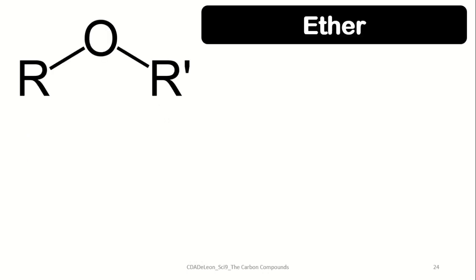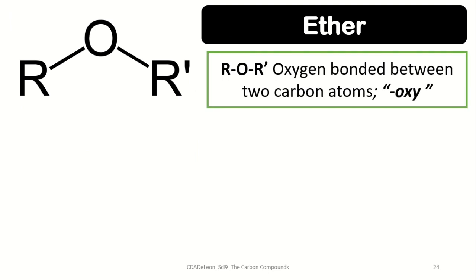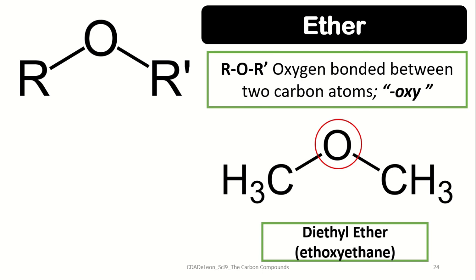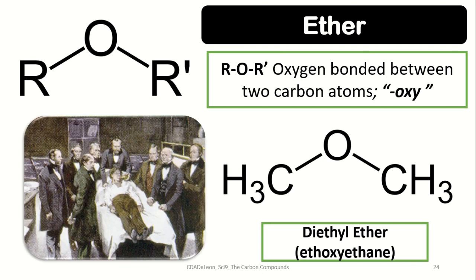Next we have ethers. Ethers refer to an oxygen atom found between two hydrocarbon groups. They are named using the suffix -oxy. An example is diethyl ether, which was formerly used as an anesthetic.